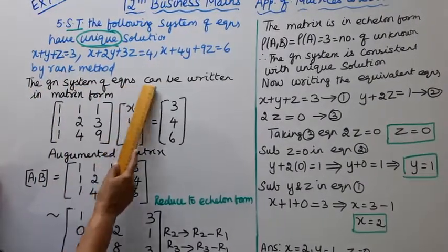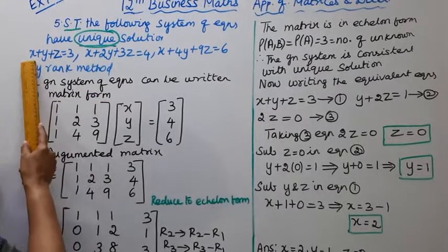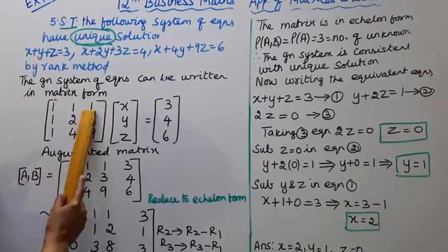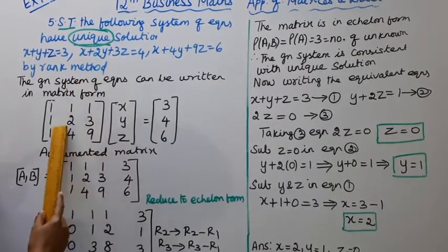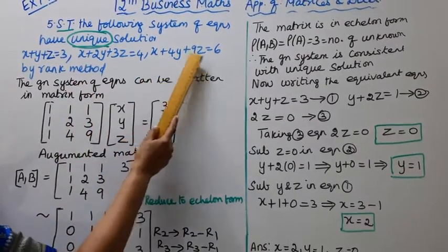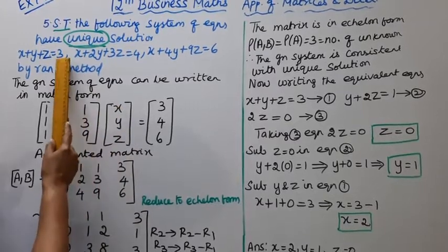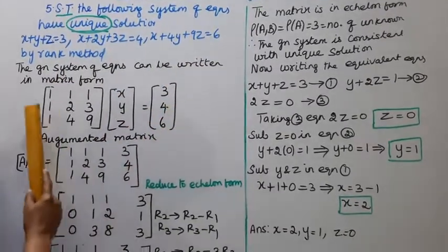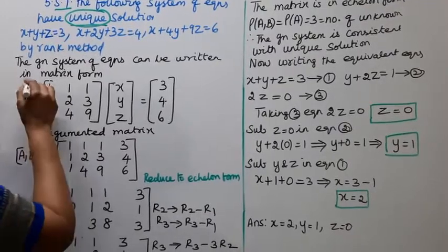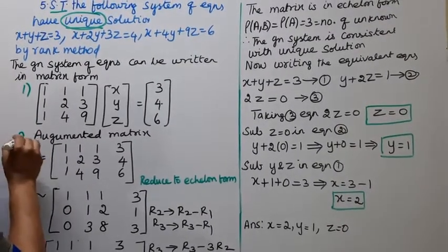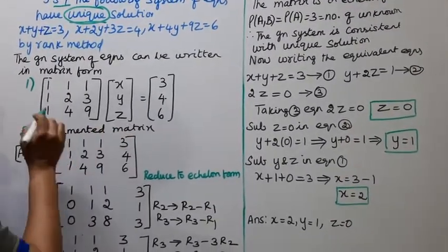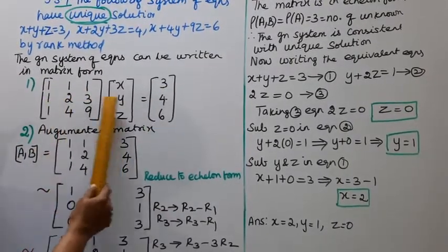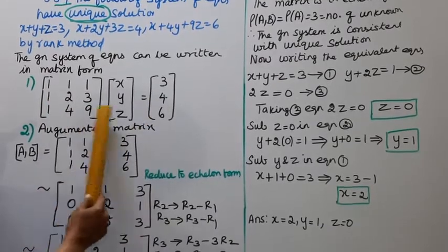The given system of equations can be written in matrix form. XYZ coefficient: 1, 1, 1; 1, 2, 3; 1, 4, 9. XYZ right-hand side: 3, 4, 6. Second, augmented matrix: [1, 1, 1, 3; 1, 2, 3, 4; 1, 4, 9, 6].